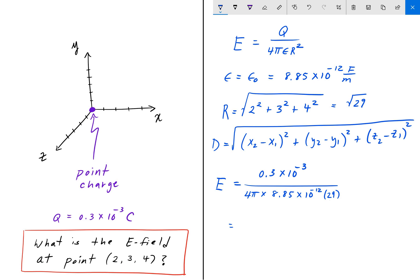And when we plug all this in, we get 93,018 volts per meter, which is the same thing as 93.02 kilovolts per meter.